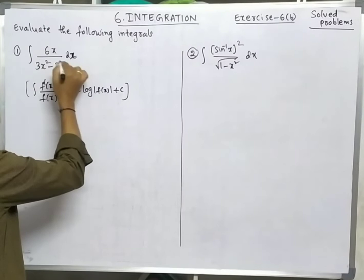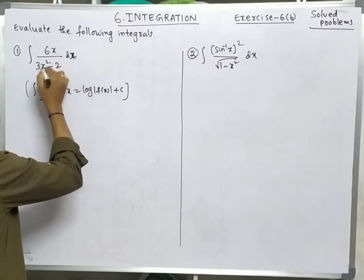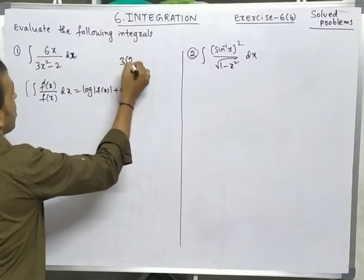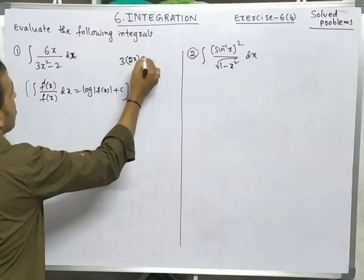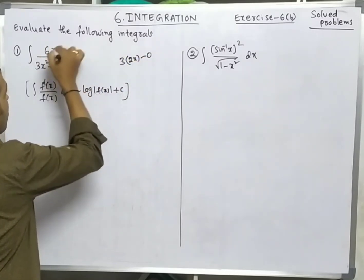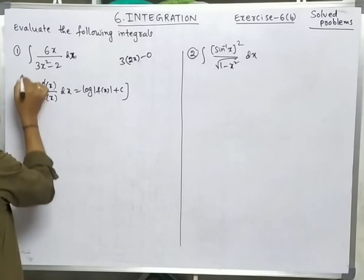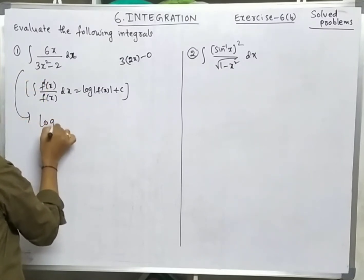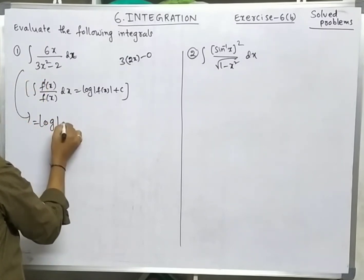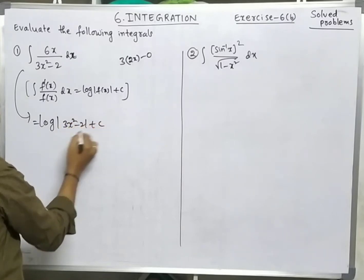Observe: the denominator is 3x² - 2. The derivative of 3x² is 3·2x = 6x, and the derivative of -2 is 0, giving us 6x — which is exactly the numerator. So obviously the answer is log|3x² - 2| + c.